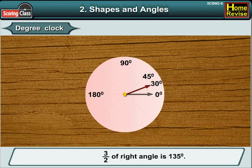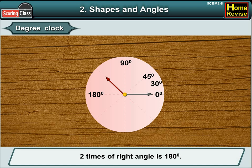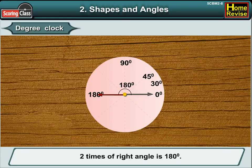Three halves of a right angle is 135 degrees, and two times a right angle is 180 degrees.